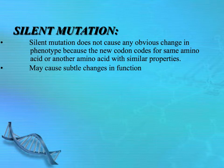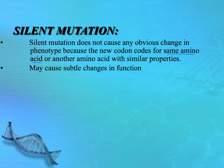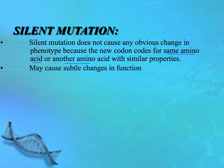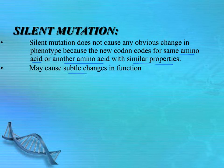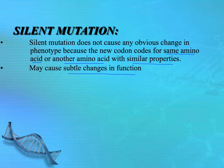And then silent mutations, as mentioned, don't cause any obvious change in the phenotype because either the new codon codes for the same amino acid — remember there were several different codes for any particular amino acid on that chart from protein synthesis — or if it's another amino acid with very similar properties, you may not be able to tell there has been a mutation in the genotype unless you did a genome analysis. There is some evidence that silent mutations can cause subtle changes in function, and researchers are using silent mutations to try to develop effective vaccines and track genetic properties.